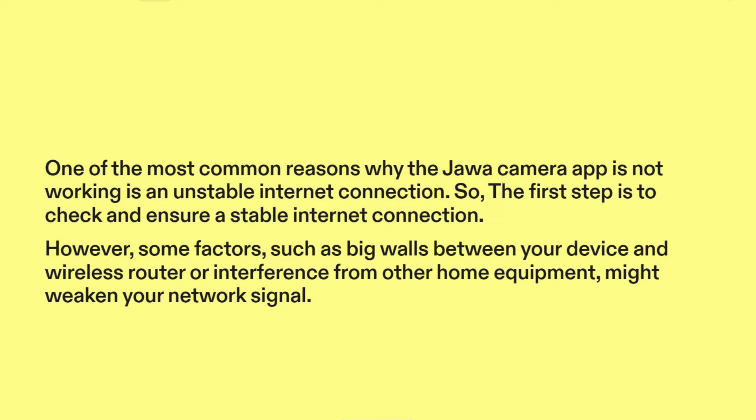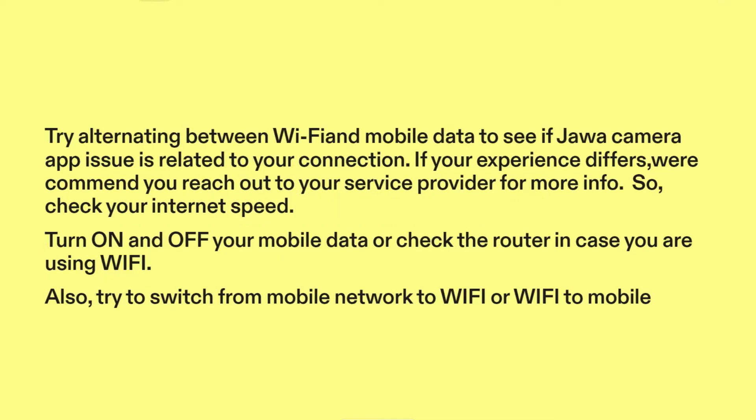However, some factors, such as big walls between your device and wireless router or interference from other home equipment, might weaken your network signal. Try alternating between Wi-Fi and mobile data to see if the Jawa camera app issue is related to your connection.